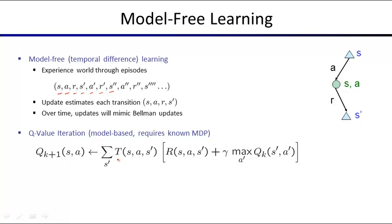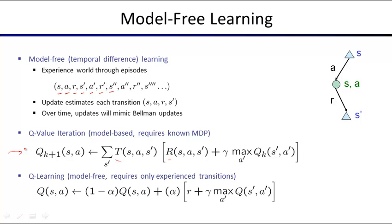We have a current running estimate of Q, averaged with the current sample: the reward experienced plus gamma times the value of the next state, estimated as the max over actions in that next state. The learning rate alpha controls how much weight the current sample gets — closer to one means more weight on the current sample. Alpha should decay over time: initially make big updates, then stabilize as estimates improve.